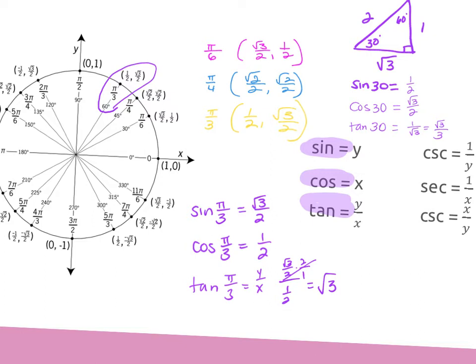You take the coordinate points given with the angle and plug into y, x, or y over x depending on whether it's sine, cosine, or tangent. And for the reciprocal functions, you just flip it. So if I wanted cosecant, I'd take that and flip it.